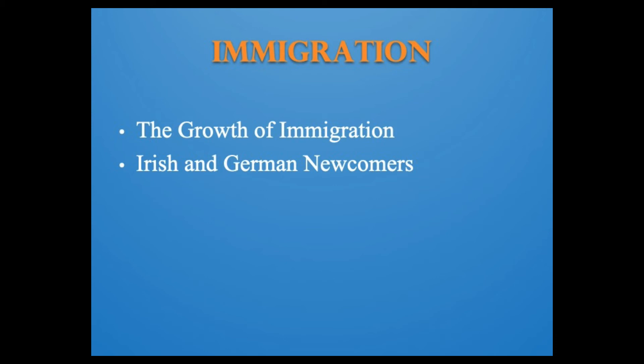Frequently, the first emigrant of a family to go was a male member who would work and send back money for the remainder of the family to follow. America offered political and religious freedom to Europeans living under repressive governments and rigid social hierarchies. But the largest number of immigrants fled catastrophe, such as the Irish men and women who escaped from the Great Famine of 1845 to 1851, when a potato blight starved one million Irish to death and caused another million to migrate, mostly to America. These migrants, having worked mostly in agricultural labor, moved into unskilled or low-skilled jobs — men into common labor, rail and canal construction, longshore and factory work, and women into domestic service.